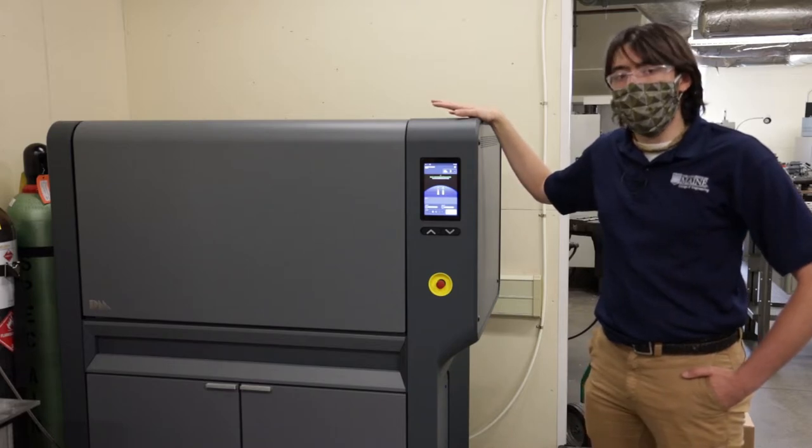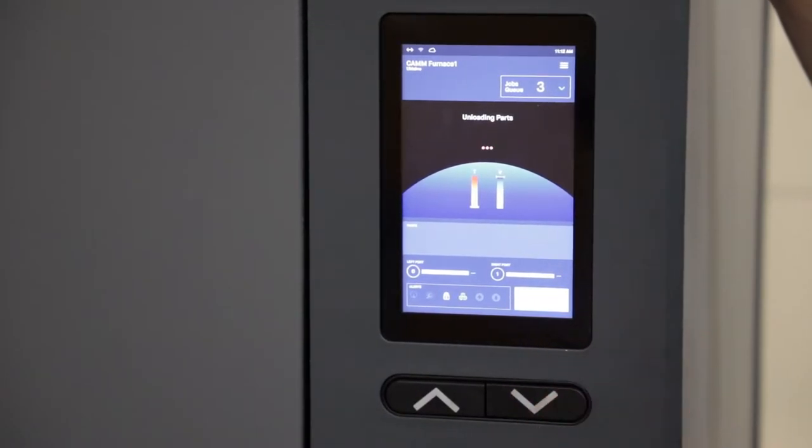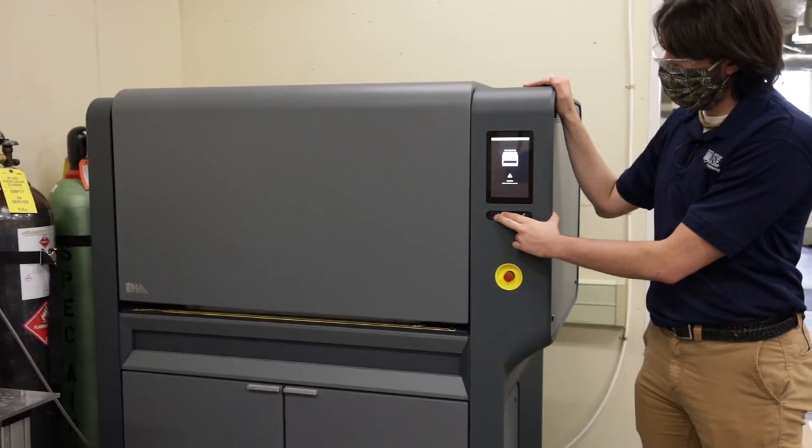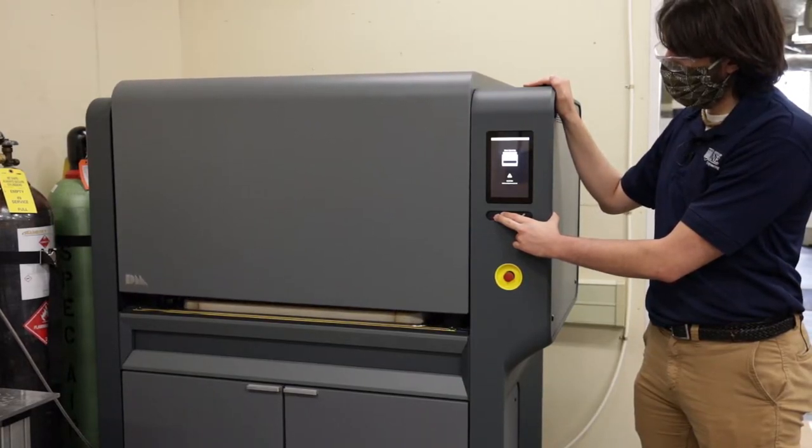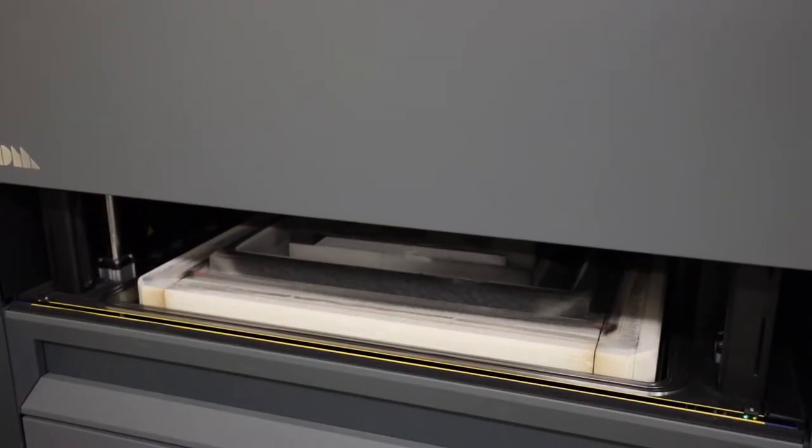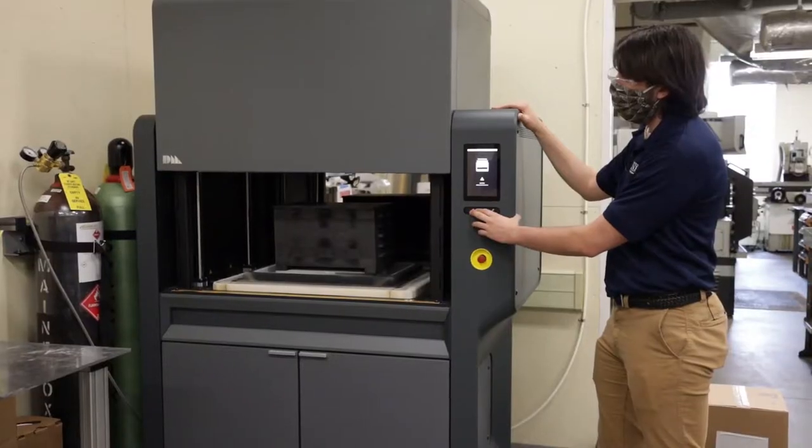In the furnace, the part gets fully debond and then subsequently sintered. So the sintering process takes the metal particles and brings them together into a full metal part that's near full density. It's almost 100% dense, a metal part at that point.